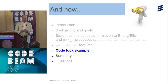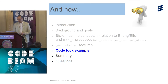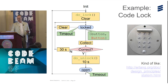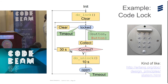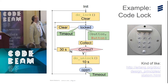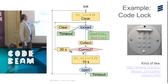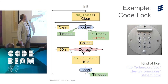Here is a callback example using a code lock. When you go into the locked state, we lock the lock and clear the button buffer. When you get a button event, we collect all the buttons. If you have the correct code, we unlock, go to state open, start a timer for 10 seconds, and on timeout, go back. If we get a wrong code, we start a timer for 30 seconds. If we get the timeout, we clear the buttons.